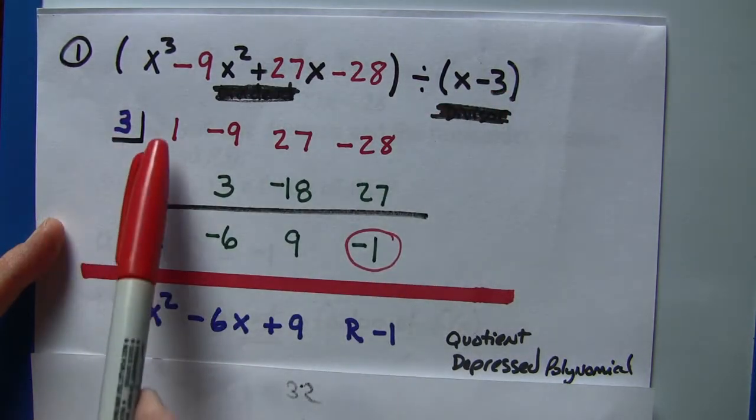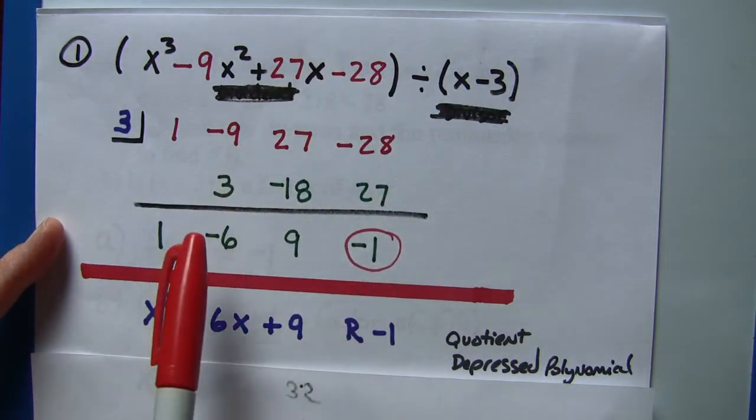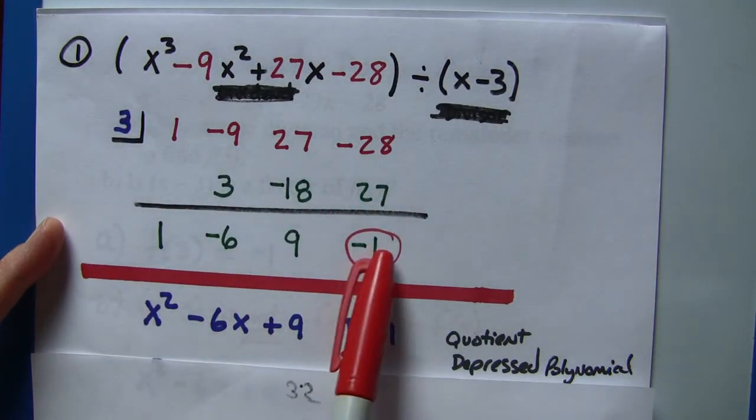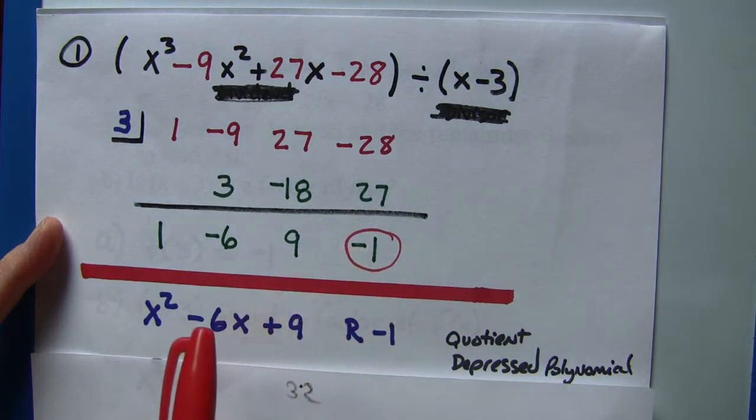So doing the synthetic division, made the half square, put the 3 in, here the coefficients of this polynomial, we went through the synthetic division, and we got over here the remainder of -1.